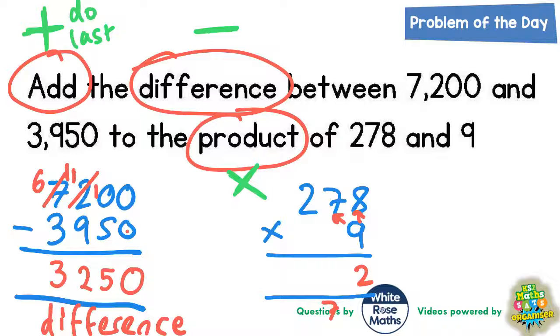9 lots of 7 is 63. Plus the 7 is 70. Put the 0 in, carry the 7. And 9 twos are 18. Plus the 7 is 25. Put the 5 in, carry the 2. But because we've run out of columns and there's nothing else to times, that 2 can go straight in. 2502.